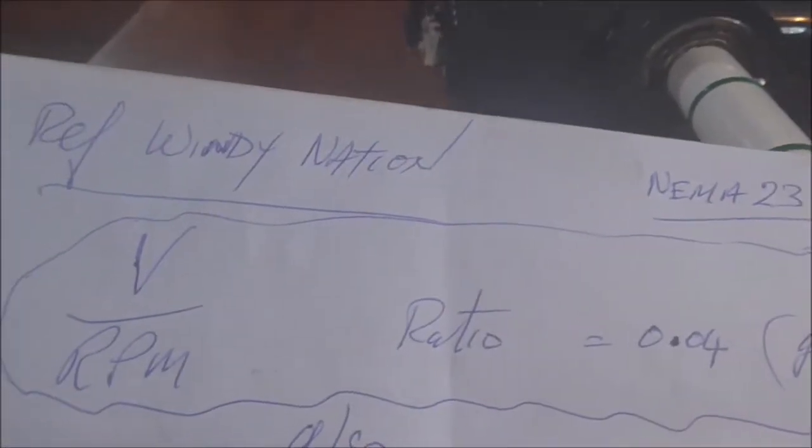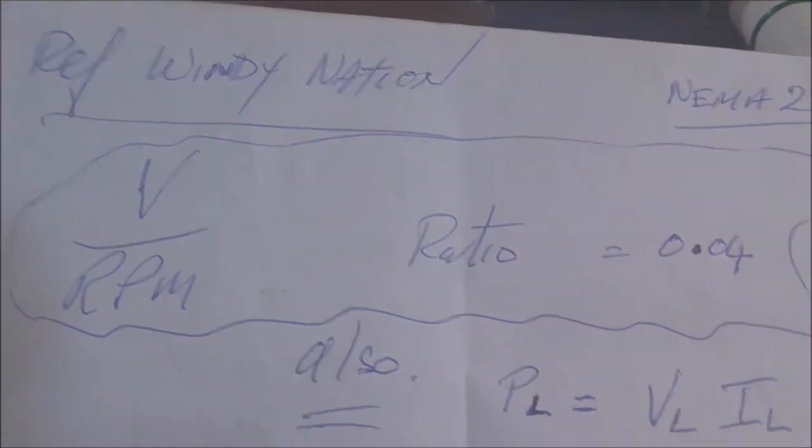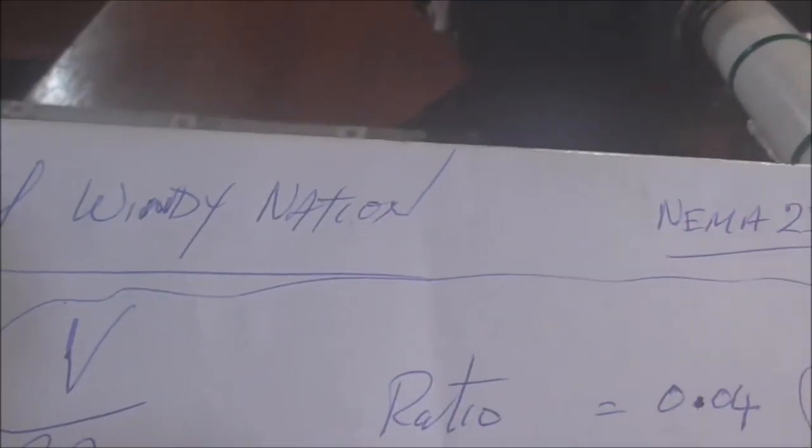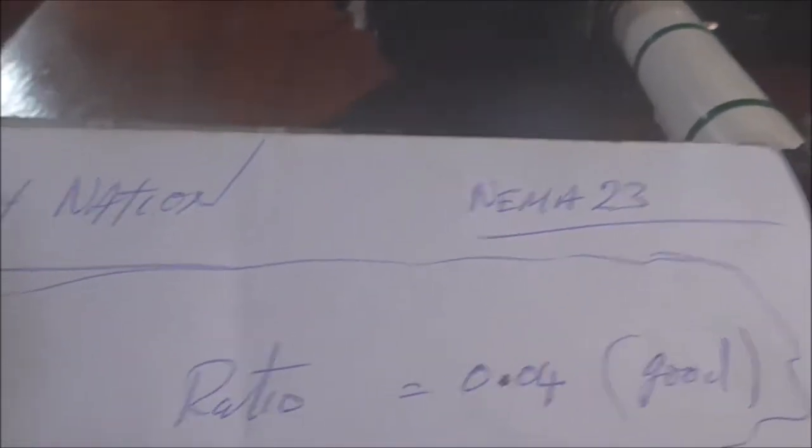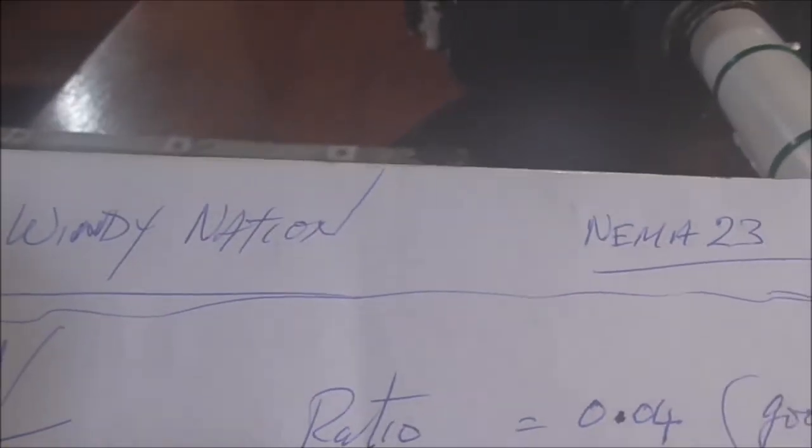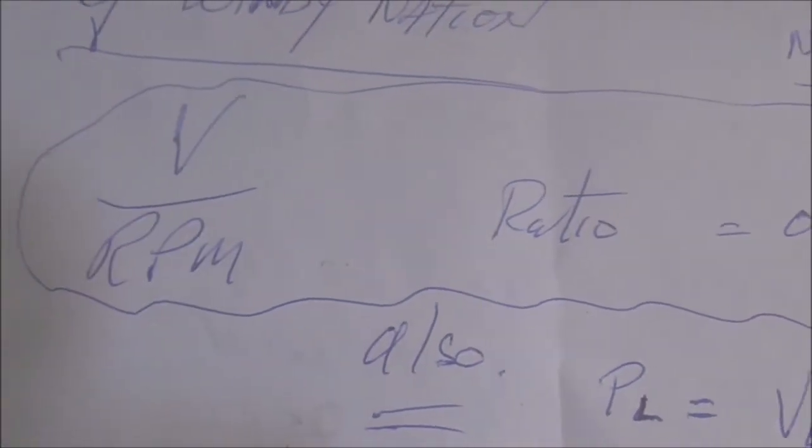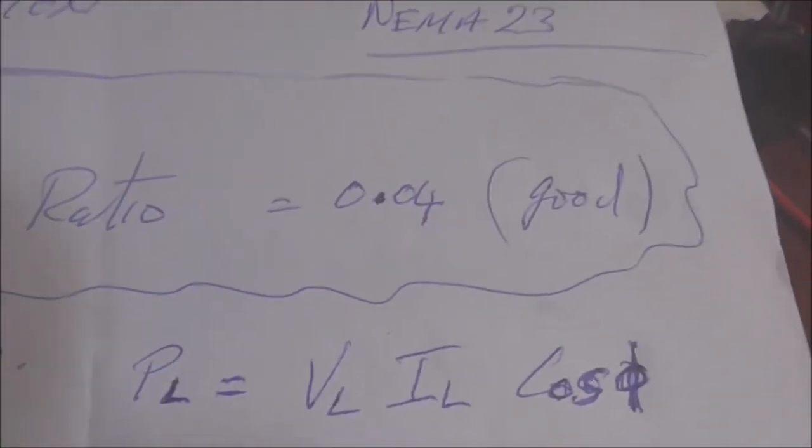Before I started to go for the NEMA 23, I started looking around on Google. I came across this Windy Nation. They had a couple of good articles on small turbines and they had this ratio of V over RPM and they had a factor, so that was a good read.